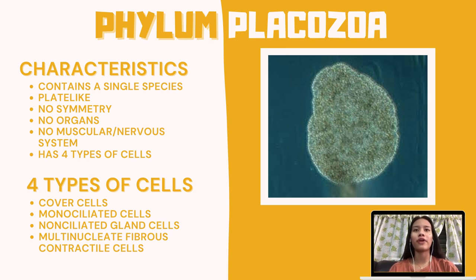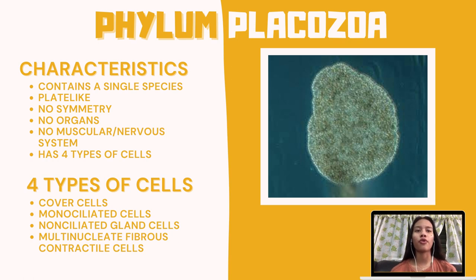Lastly, we will be talking about the phylum Placozoa. The phylum Placozoa was proposed in 1971 by K.G. Grell to contain a single species, Trichoplax adhaerens, a tiny marine form. The body is plate-like and has no symmetry, no organs, and no muscular or nervous system. It also lacks both a basal lamina beneath the epidermis and an extracellular matrix — two features that were considered animal hallmarks. They divide asexually and produce dispersal stages by budding. Sexual reproduction has been inferred from molecular evidence of genetic diversity within the phylum.